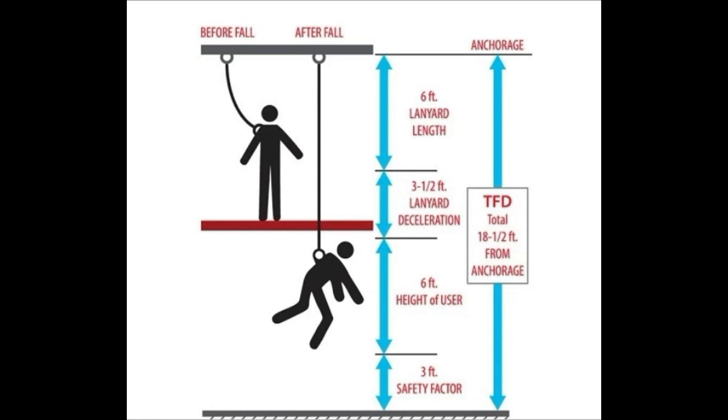This is the vertical distance a worker falls before the fall arrest system stops the fall. The FFD depends on the position of the worker's anchor point relative to the harness back D-ring. If the anchor point is at the same level as the D-ring, the FFD is equal to the lanyard length. However, if the anchor point is above or below the D-ring, the FFD will change accordingly.